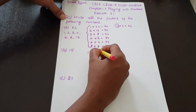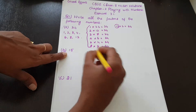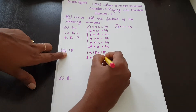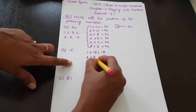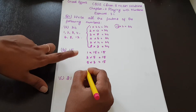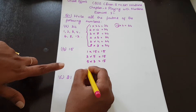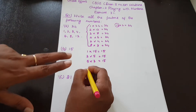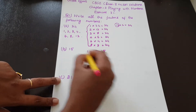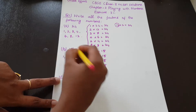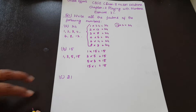Next, 1 into 15 equals 15. 2 times table does not go. 3 into 5 equals 15. 4 does not go. 5 into 3 equals 15. 6, 7, 8, 9, 10, 11, 12, 13, 14 — none of these divide 15. 15 into 1 equals 15. So the factors of 15 are: 1, 3, 5, 15.